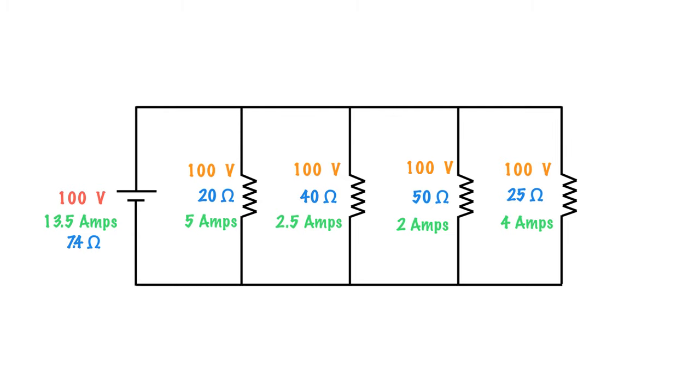We could use the law of resistors in parallel and add them reciprocally. 1 over 20 plus 1 over 40 plus 1 over 50 plus 1 over 25 gives us 1 over the answer, which is 1 over resistive total.